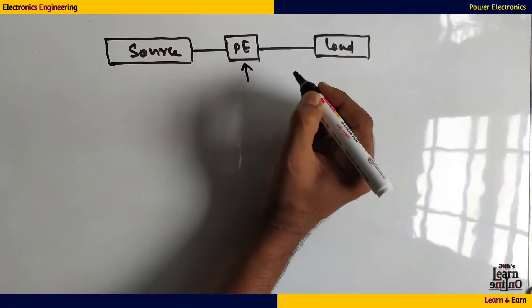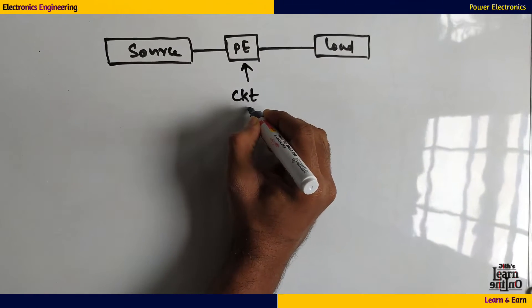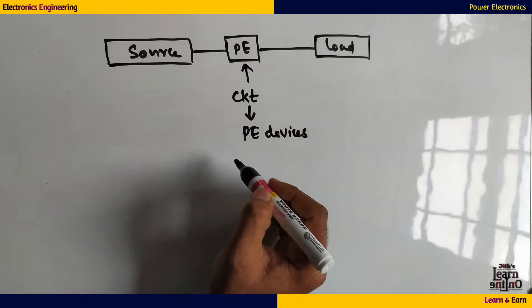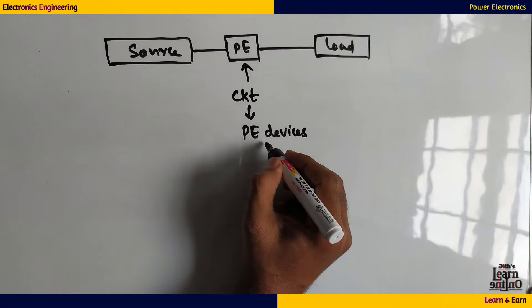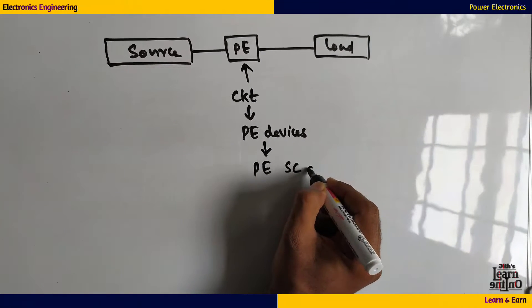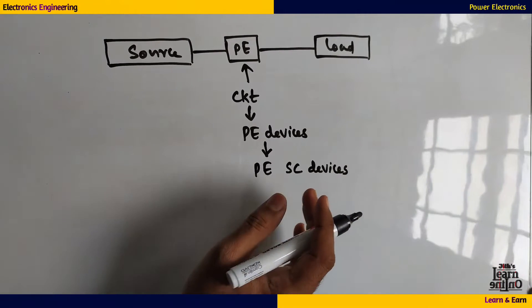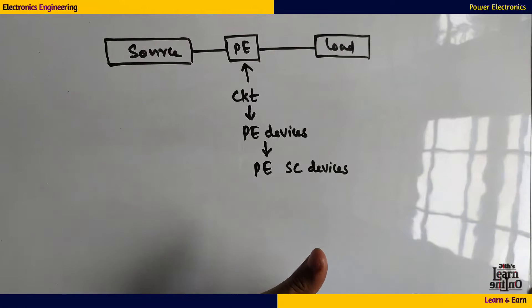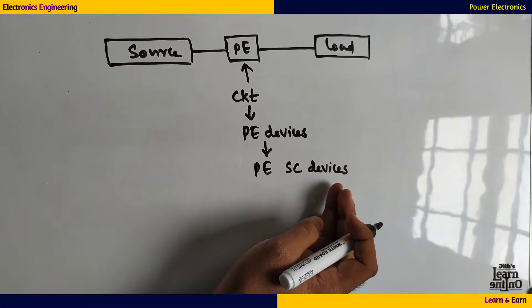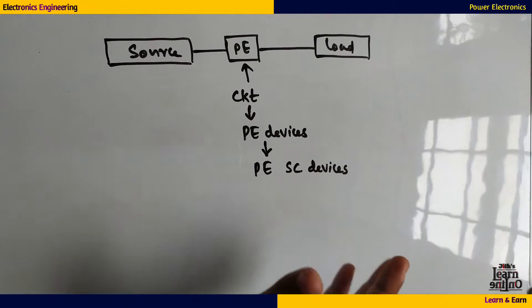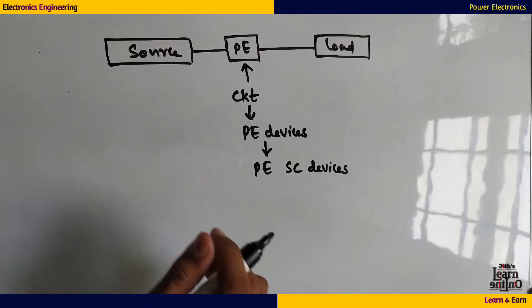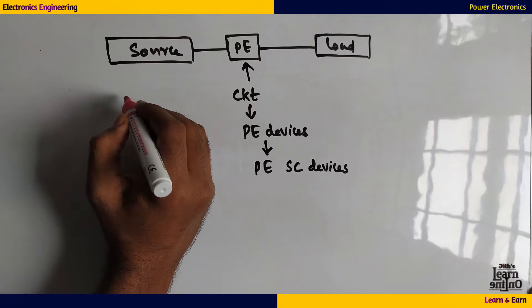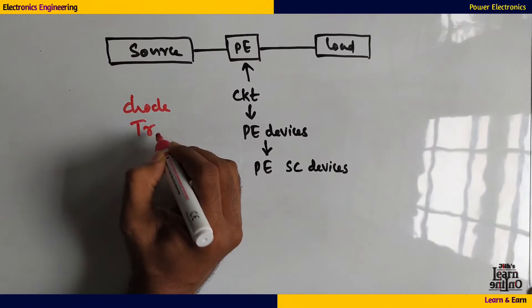What is the power electronic system? It is a circuit. What are the power electronic devices? Power Electronics uses power electronic semiconductor devices. In analog electronics we use a diode, transistor, and MOSFET.